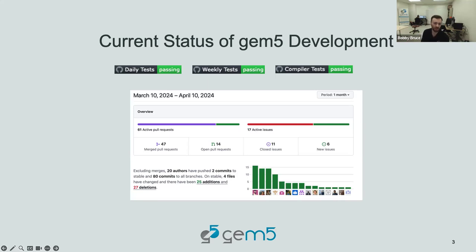The last month had a pretty average number of commits — roughly we have a thousand commits a year, so we're on track for that. It's always nice to see we're merging and closing more issues and pull requests than we're opening, because normally that's not the case. We're keeping on top of things and getting much better at managing the project, getting things in and not letting things hang around for too long.